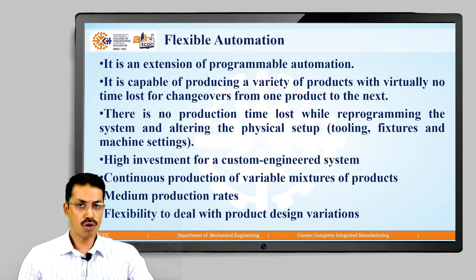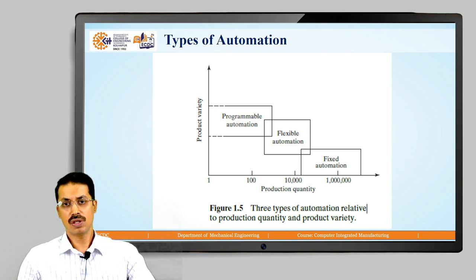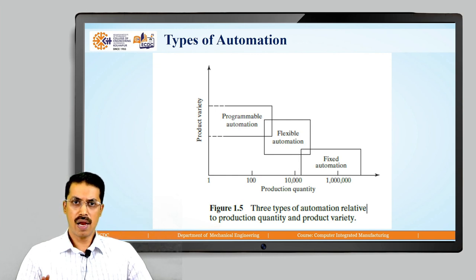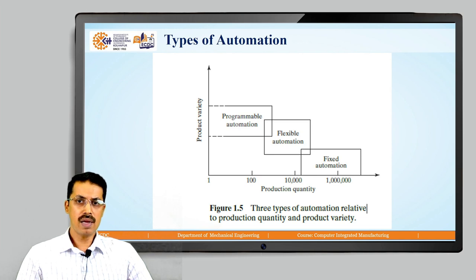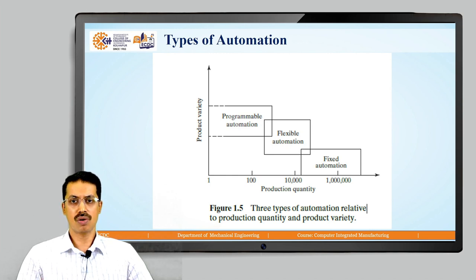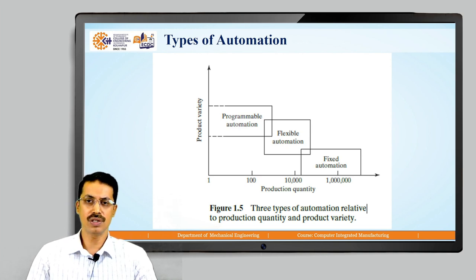These are the three types of automation: fixed automation, programmable automation, and flexible automation. The automation strategy depends on production quantity and product variety. If production quantity is high and product variety is low, go for fixed automation. For high variety and low quantity, go for programmable automation. For mid variety and mid production quantity, go for flexible automation. Hope all of you understand the types of automation and in which situation each type of automation strategy is used. Thank you.